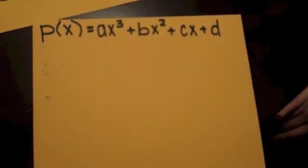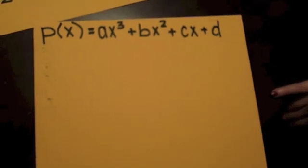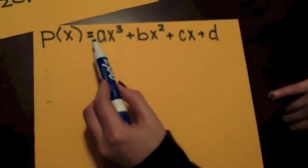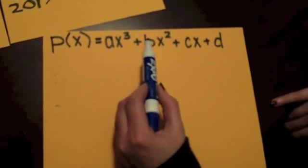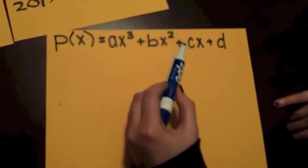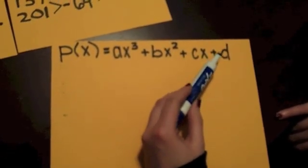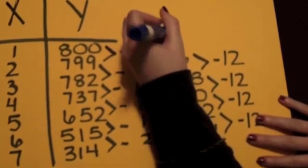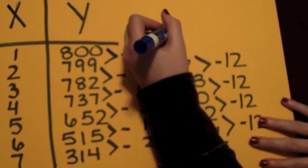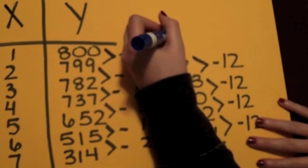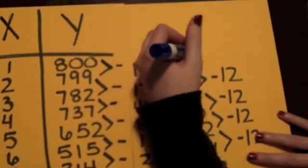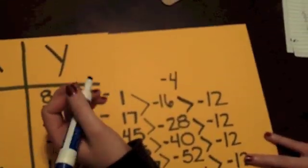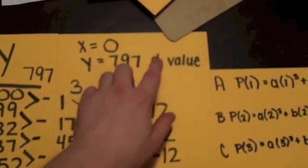A polynomial of degree three will have the form P(x) equals Ax cubed. Now that we have the constant coefficient, we are going to work backwards to find the y value when x equals zero. So now we have found our D value.